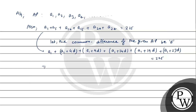Sab A1 terms ko jod denge to 6A1 ho jayega. Plus D ke coefficients jodenge: 4 plus 9 plus 14 plus 19 plus 23 = 69. So we get 6A1 plus 69D is equal to 225.